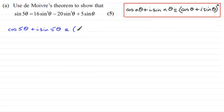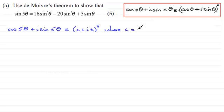I'm going to write this as (c + is) to the power 5 for short, where c is equivalent to cos θ and s is equivalent to sin θ.